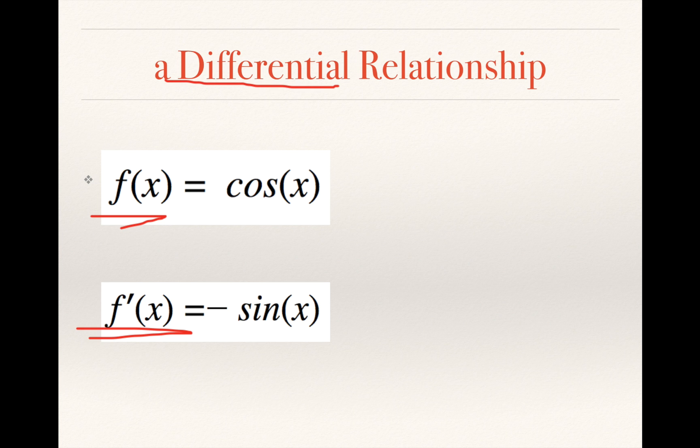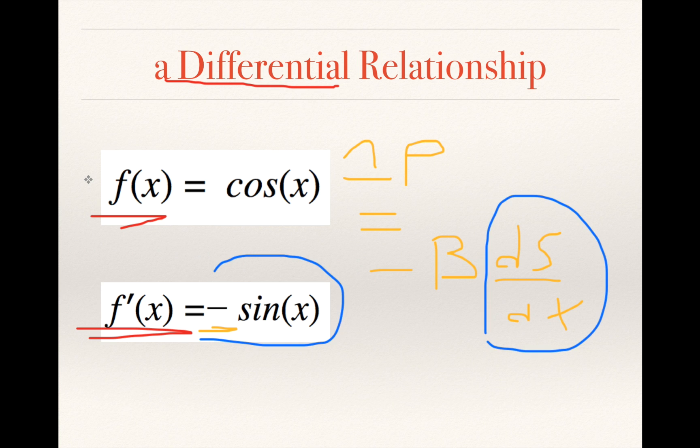So you may be asking, where does the negative go? Well, in the textbook we are shown that Δp = -B × ds/dx. So our ds/dx is our negative sine, and our negative B multiplies with that to give a positive, seeing as a negative and a negative is a positive.